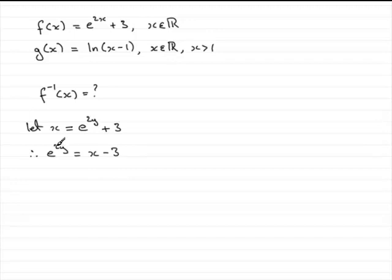Now because our y here is a power, we need to take natural logs to both sides. So we have the natural log of e to the 2y equals the natural log of all of x minus 3.